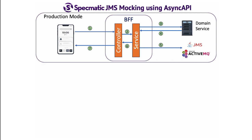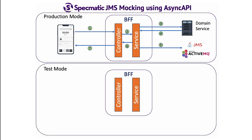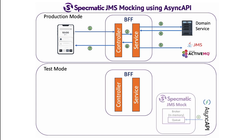Now, to test this application in isolation, we take an async API specification which describes the JMS queue and the schema of the messages that it is expected to receive. And we mock it out using Specmatic's JMS mock. With the JMS mock now in place, we can run contract tests against the application. Let's see how we do this.